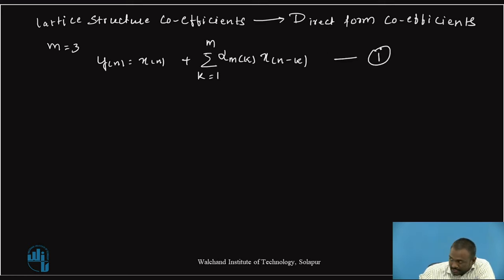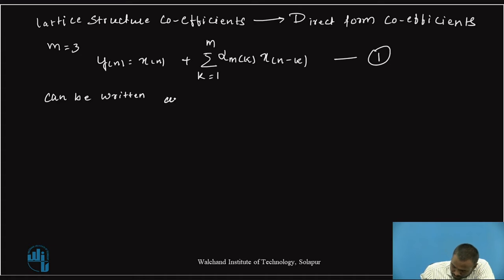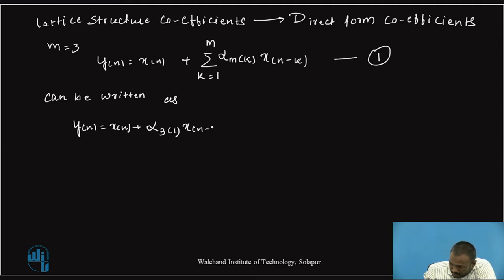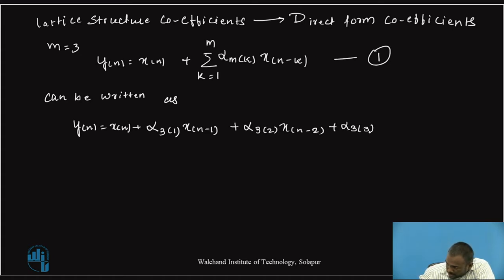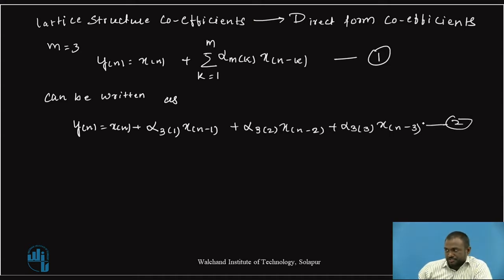Equation 1 can be written as: y(n) is equal to x(n) plus alpha_3(1) x(n minus 1) plus alpha_3(2) x(n minus 2) plus alpha_3(3) x(n minus 3). This is the three-stage output of the lattice structure.